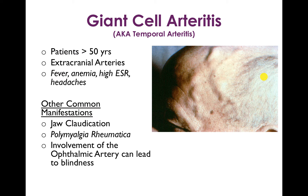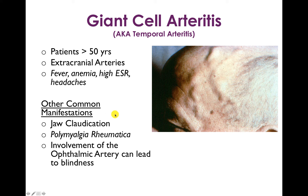Giant cell arteritis also goes by the name of temporal arteritis, which is a pretty descriptive term because this arteritis tends to involve the extracranial arteries — specifically the temporal arteries — though any branch of the carotid artery can be involved. It affects older patients, usually over 50 years old. A classic presentation is fever, anemia, a high erythrocyte sedimentation rate over 100, and headaches. The headaches come from temporal artery involvement, and other common manifestations include jaw claudication if the arteries supplying the jaw are compromised.